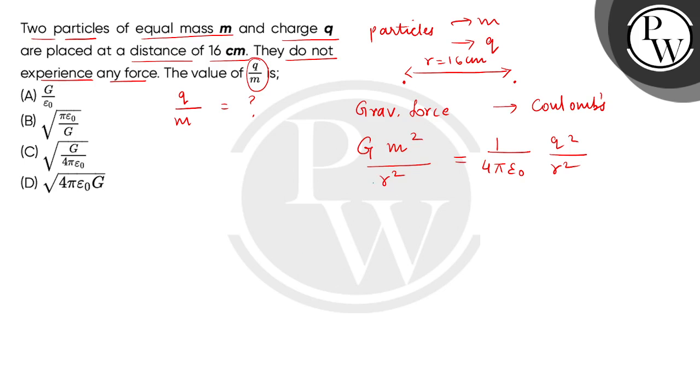We can see from both sides that R squared will cancel, and here we will get Q squared divided by M squared.